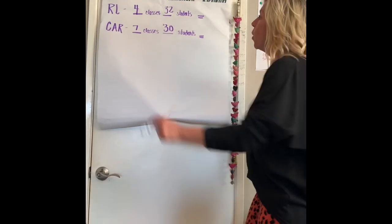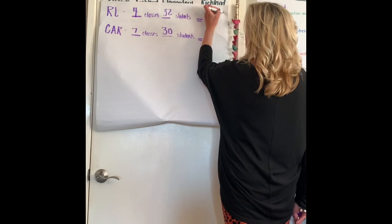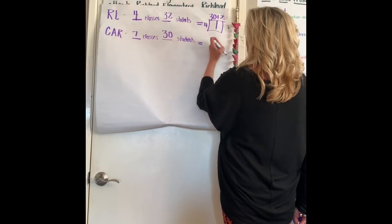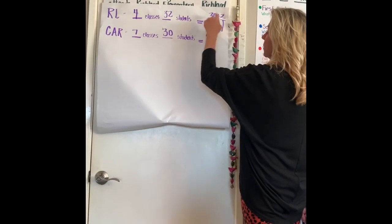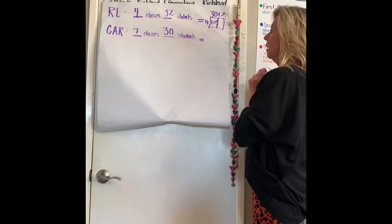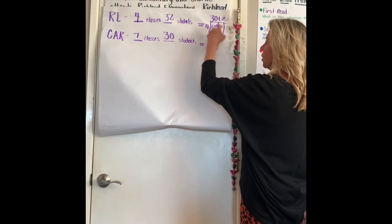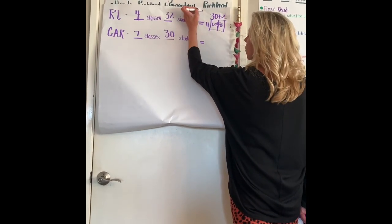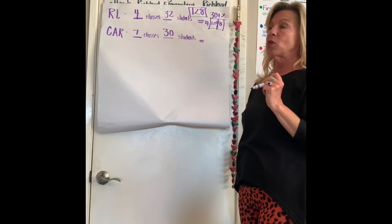So let's multiply 32 by four. Using the area model: four times 30 is 120, and four times two is eight. Adding 120 plus eight, we get 128 students at Richland Elementary.